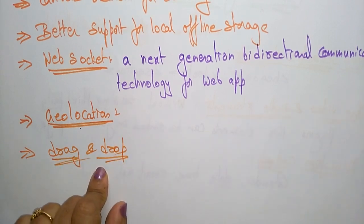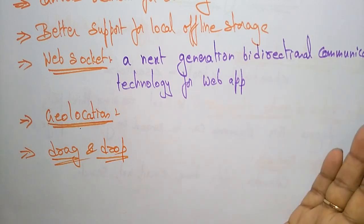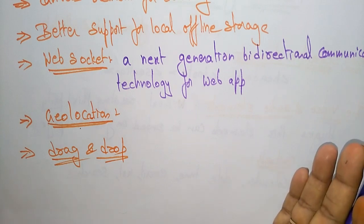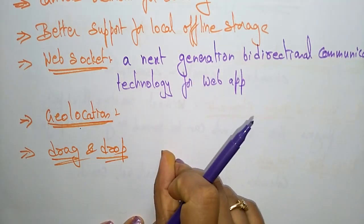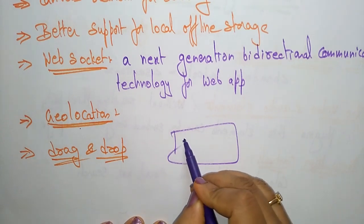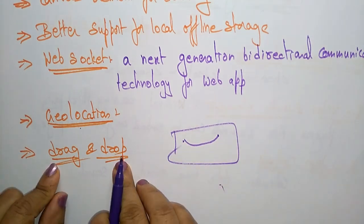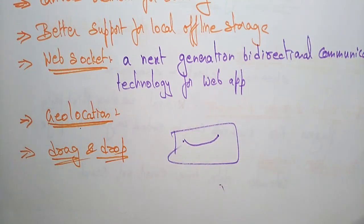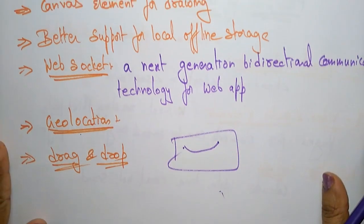The next feature is drag and drop. HTML5 has drag and drop elements that allow items to be moved from one location to another on the same web page. You can drag an item and place it in another position within the same web page. These are all the different features of HTML5: new semantic elements, video and audio elements, new form controls, canvas element for drawing, web sockets, geolocation, and drag and drop. Thank you.